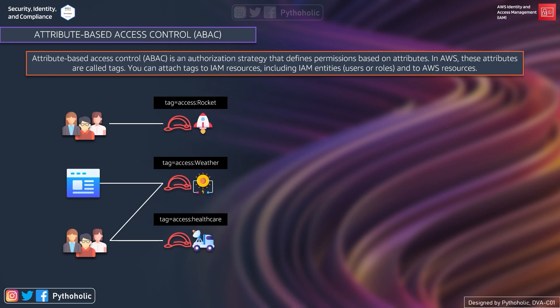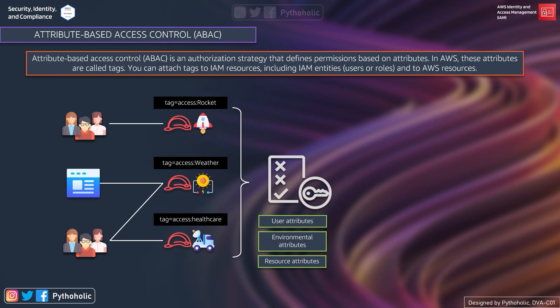We implement ABAC by attaching tags to IAM resources, including IAM entities — that is, users or roles — and to AWS resources. ABAC policies can be designed to allow operations when the principal's tag matches the resource tag. If your application or project is evolving rapidly, you just need to attach the access tags to new resources and they will be available to the users.